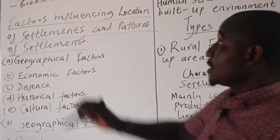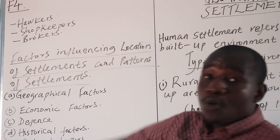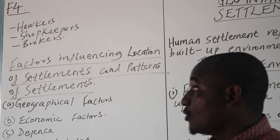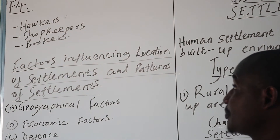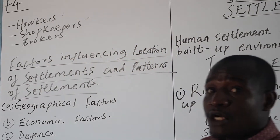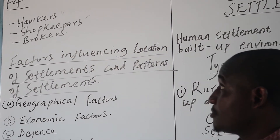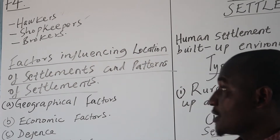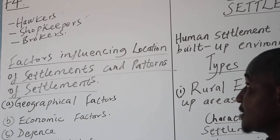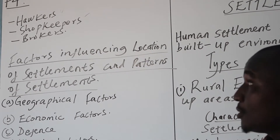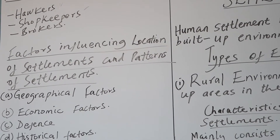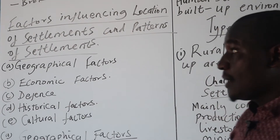There are also hawkers — these are people who move from place to place with their merchandise, looking for buyers. Then there are shopkeepers, people opening up shops to sell their merchandise to the people. And then brokers — those people who work as middlemen in terms of initiating business activities between two or more people. That basically comprises the characteristics of urban settlements, or what you expect to witness in an urban setup.